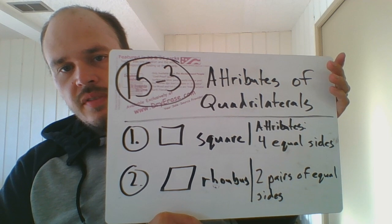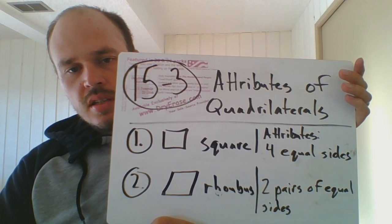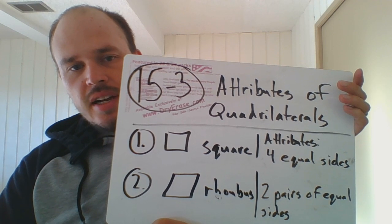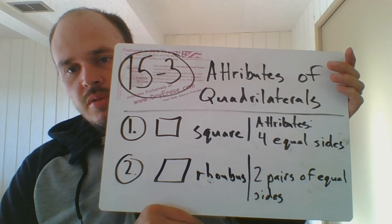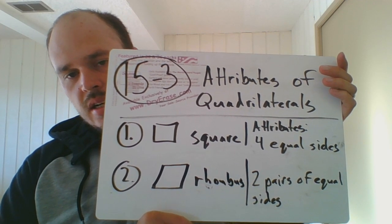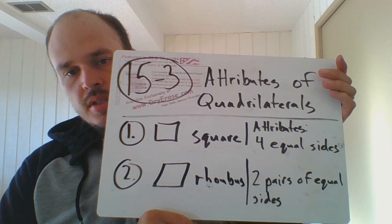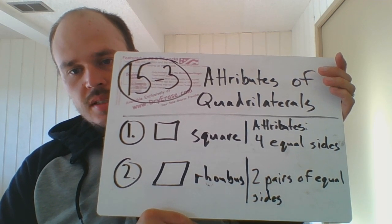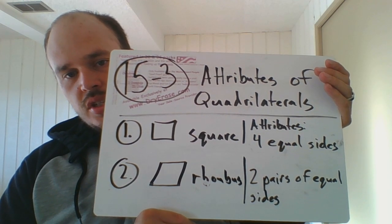Okay. Here on page 350 now, number one and two of guided practice. So if you read the directions, you're going to be writing down the name of the shape and the attributes. So obviously you could look at those and name them right away. But I really want you to work on the attributes. So number one, you have a square, and it has four equal sides, which is in your notes. Number two, that's a rhombus. It has two pairs of equal sides, which you can see there.